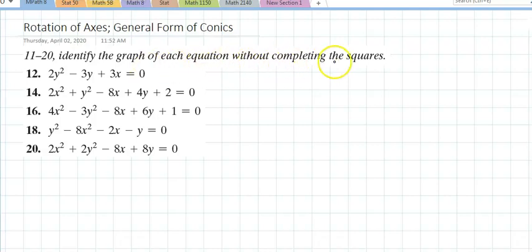Identify the graph of each equation without completing the square. Just tell me what it is. Let's get started. If I look at the first problem, what do you think that is? Well, look, only one squared. If one squared, this would be a parabola.